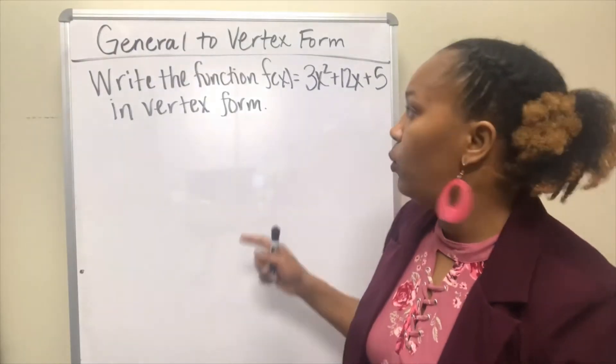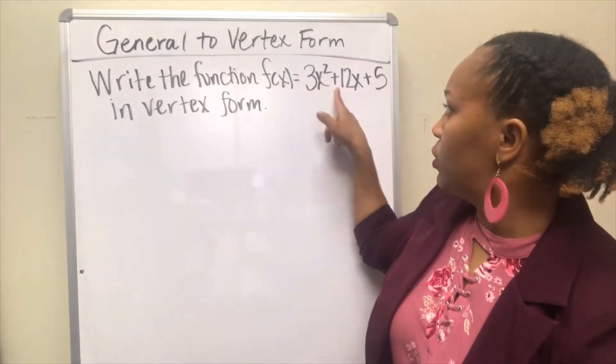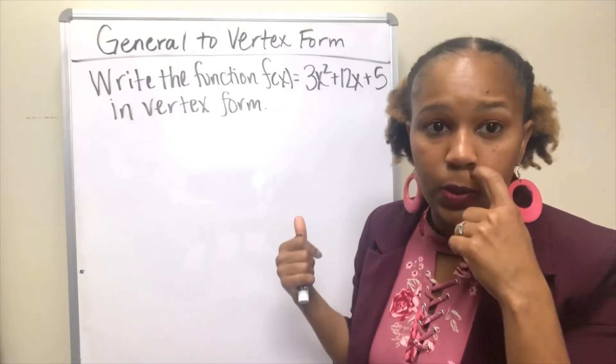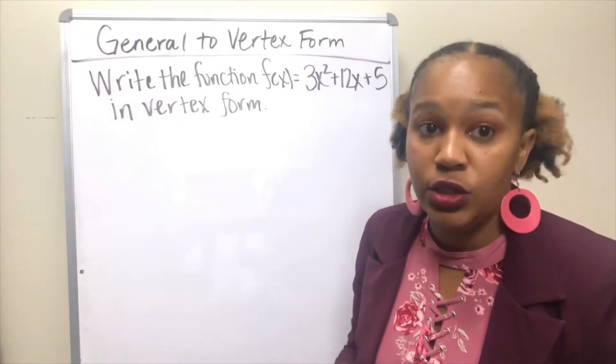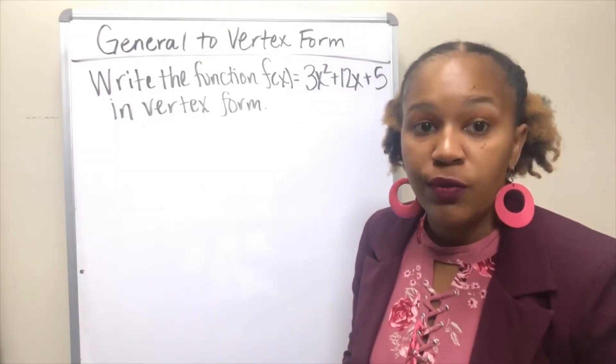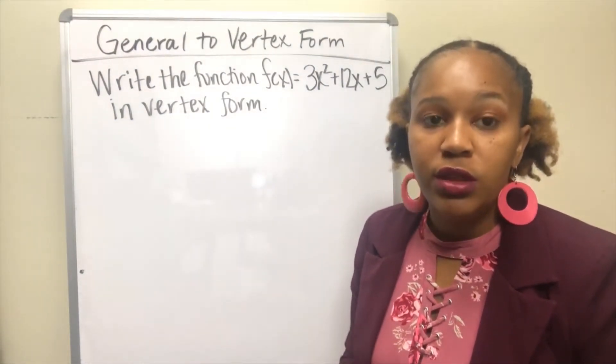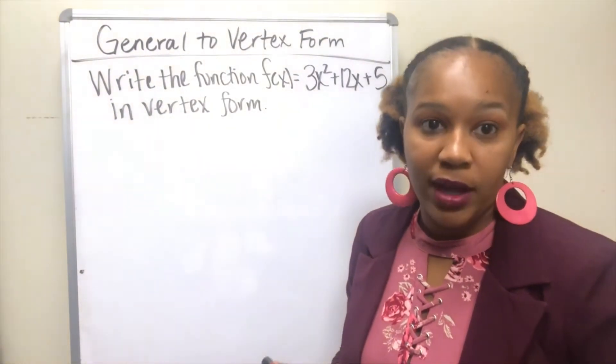For this example we want to write the function f(x) = 3x² + 12x + 5 in vertex form. So this function is a quadratic function because the highest exponent is 2 and it's in general form, and we want to actually put it in vertex form. So again we're going to do this by using the vertex formula and finding the vertex first.